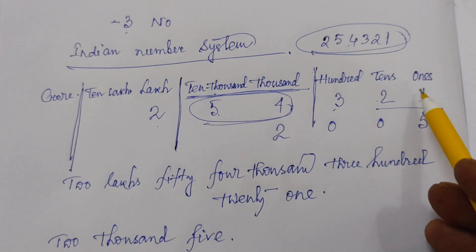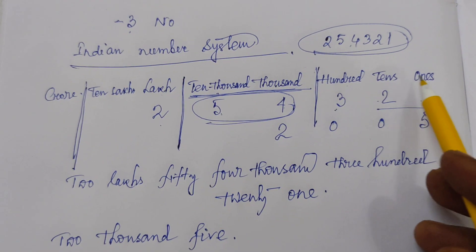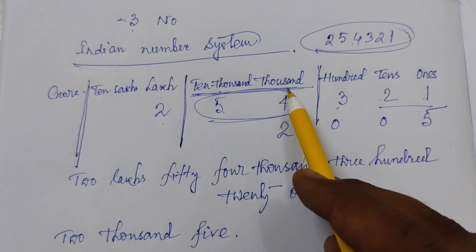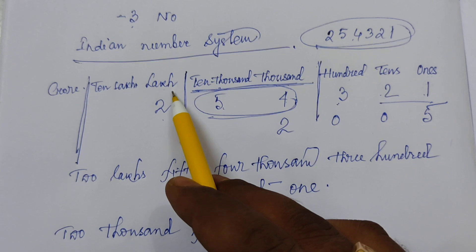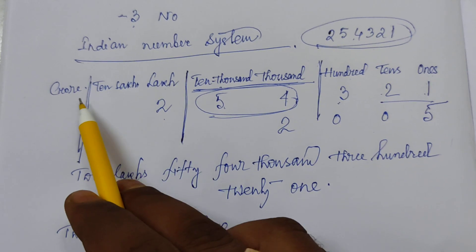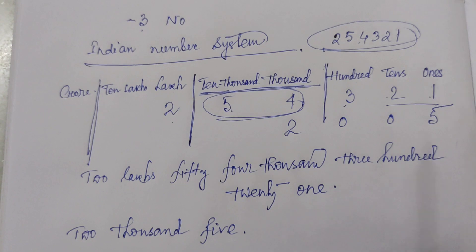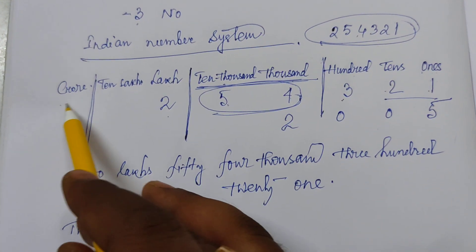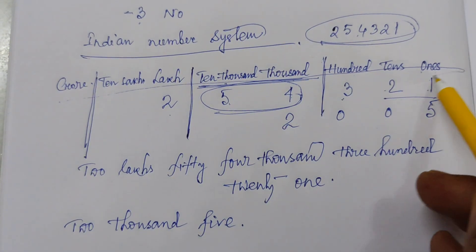So the Indian number system chart from right to left: ones, tens, hundreds, thousands, ten thousands, lakhs, ten lakhs, crore. Everyone note down this chart very carefully.